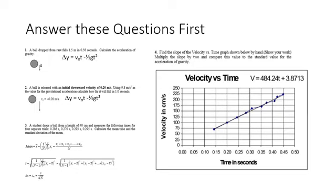This is a little bit about statistics, and I've written the statistical formulas below. You'll also see them in that lab extract, a fuller description of statistics. A student drops a ball from a height of 40 centimeters and measures the following times for four separate trials: 0.286, 0.270, 0.293, and 0.295 seconds.